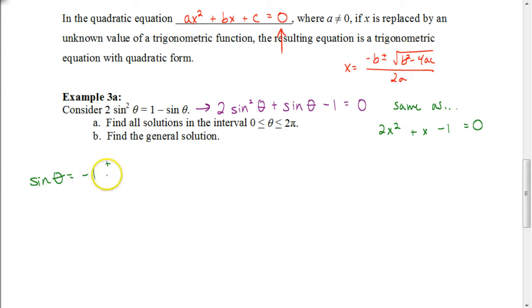So it'll be negative 1 plus or minus the square root of 1 squared, which is just 1, minus 4 times 2 times 1, all of which is divided by 2 times a, so 2 times 2.